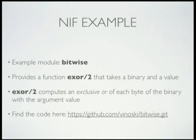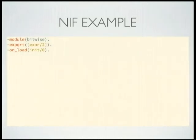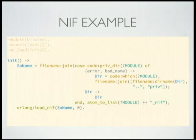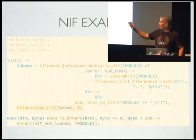Here's an example. You can go to my site on GitHub — Vinosky — and this Bitwise repo has all the code I'm going to show you today, including the slides. This example module is called Bitwise, and it provides one function called XOR. It takes a binary and a byte, does an XOR of that byte with every byte in the binary, and returns a new binary. There's our onload up there, and the init function that onload invokes just finds the name of the shared library and calls loadNIF to load it.